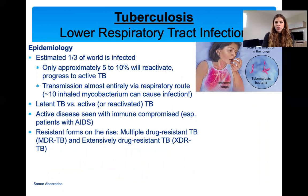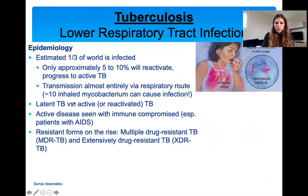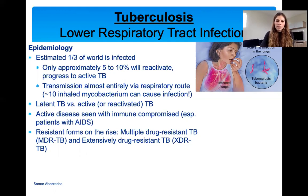Epidemiology: it's estimated that about a third of the world is infected, but most infections are not active. Only about five to ten percent will reactivate and progress to active tuberculosis. Transmission is through the respiratory tract, and the infectious dose is very low — you only need about ten bacteria to get the infection. There is latent tuberculosis, where you have the bacteria but they're not growing, and active tuberculosis, where the bacteria are spreading. Active disease is very common in immunocompromised people, such as those with AIDS.